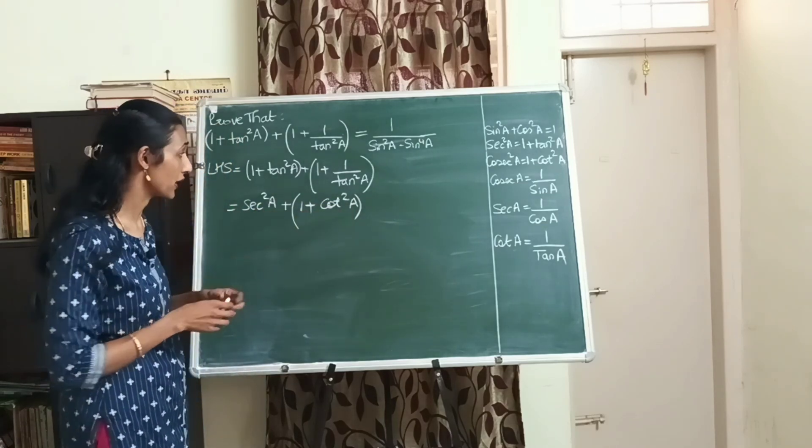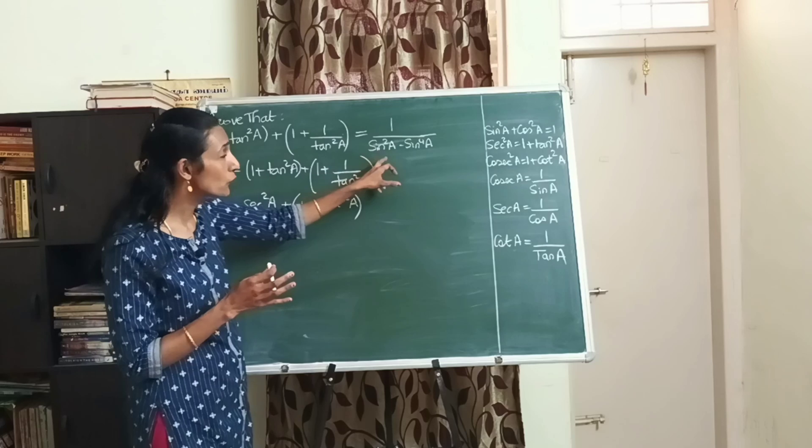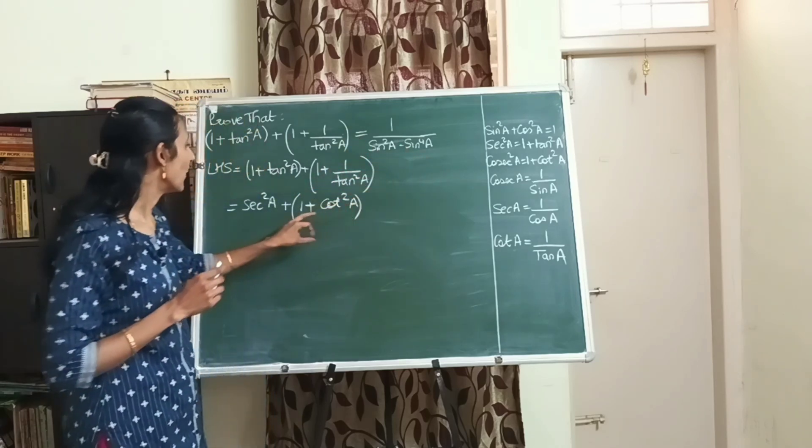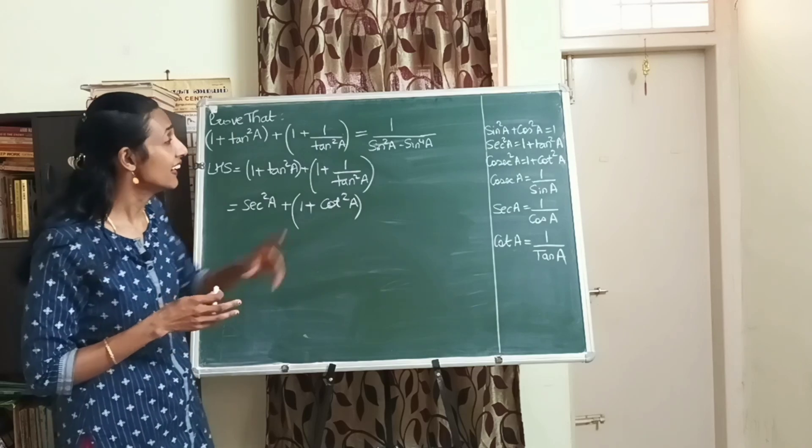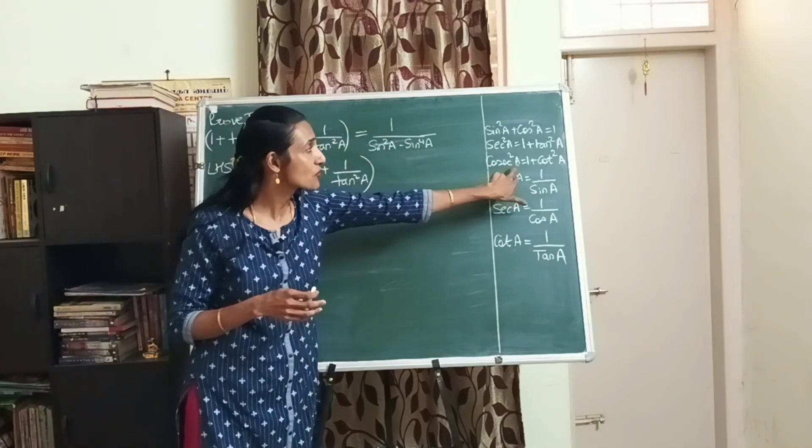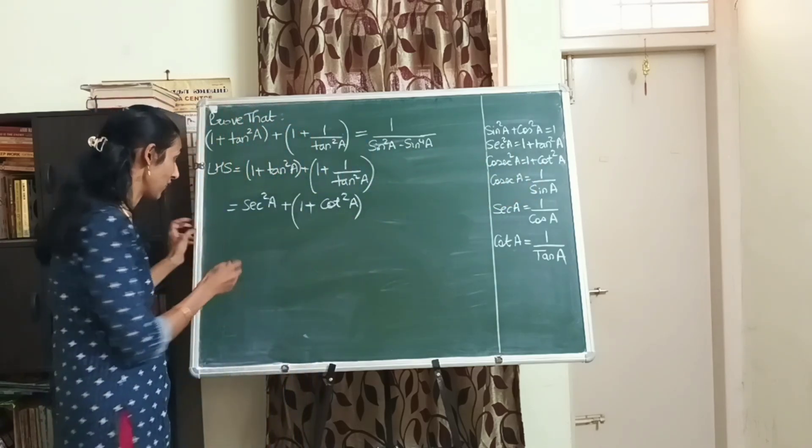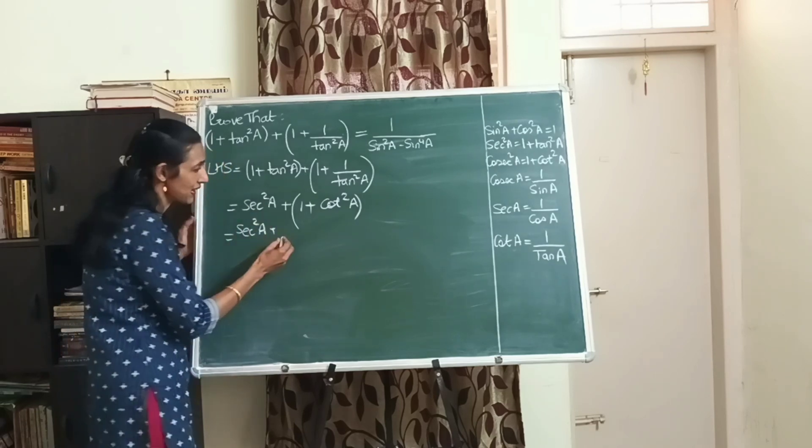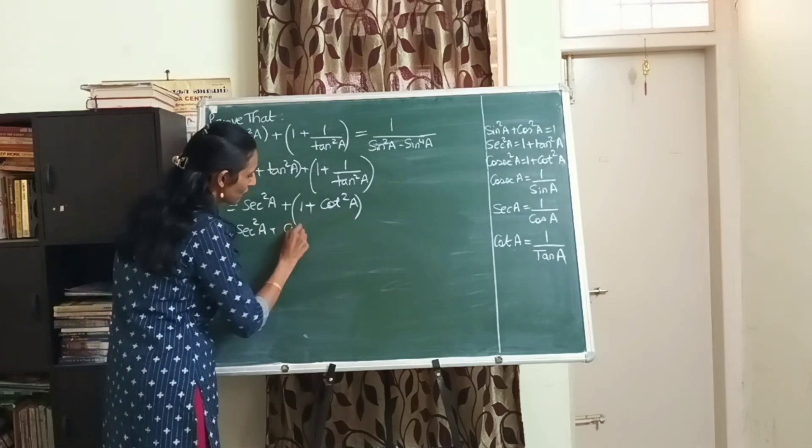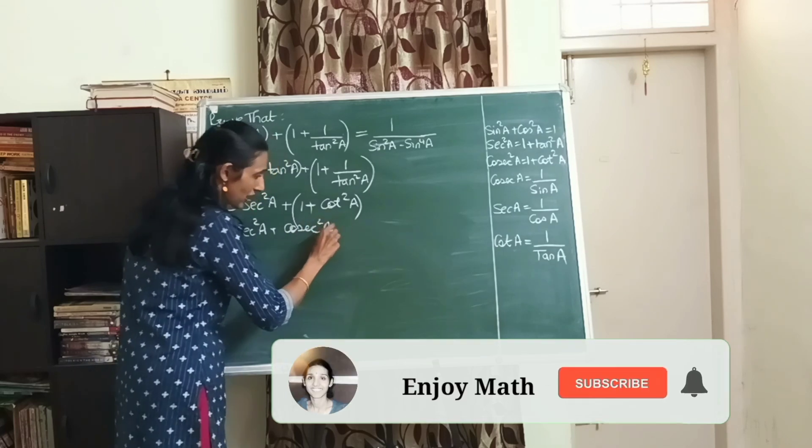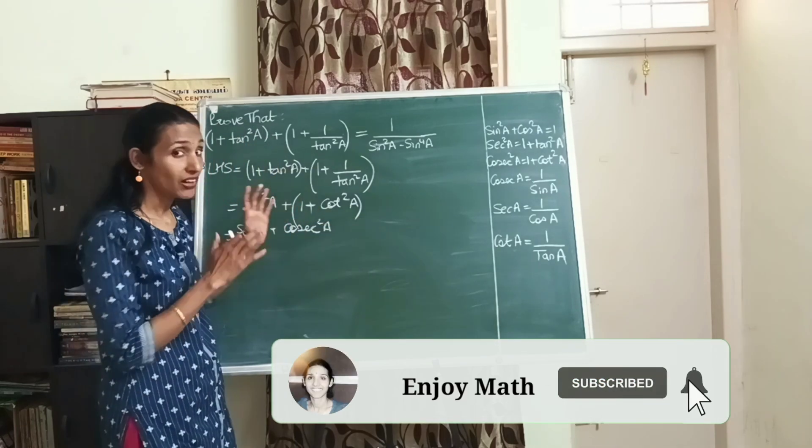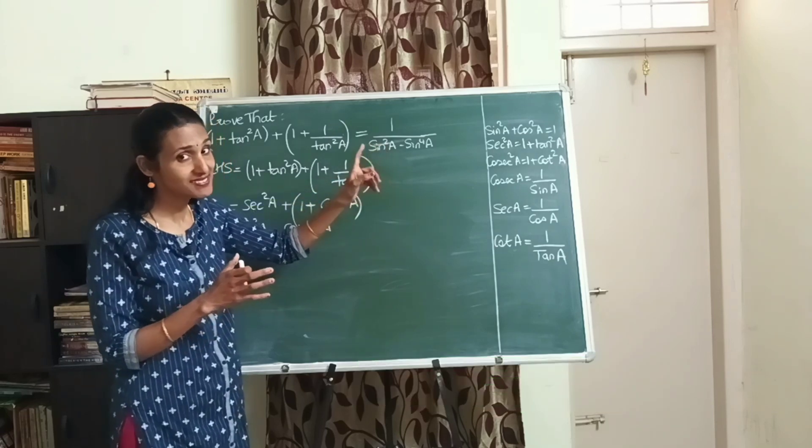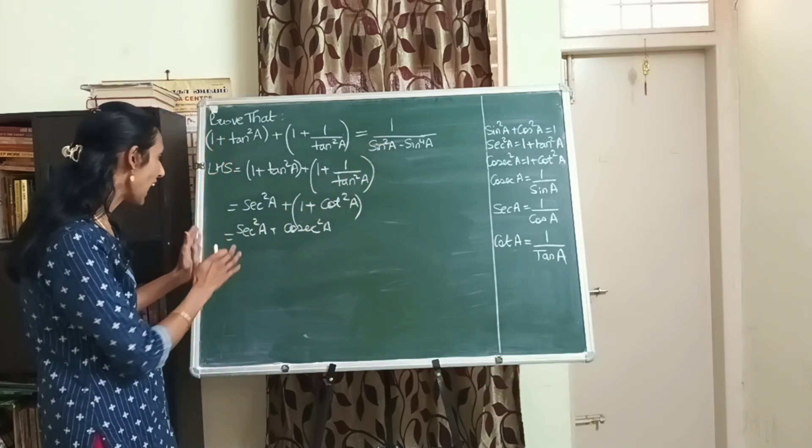Now we have sec square a and 1 plus cot square a. Again, what we need to prove, always keep checking. Now 1 plus cot square a, is there any identity? Yes, cosec square a is 1 plus cot square a. So now I can write sec square a and this whole thing I'll replace as cosec square a.